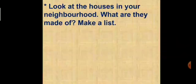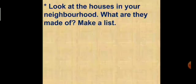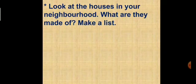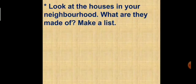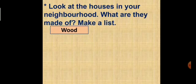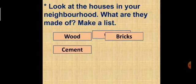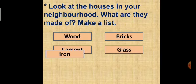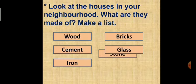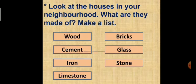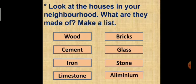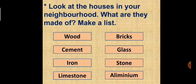Now, look at the houses in your neighborhood. And what are they made of? Make a list. So, you have to write in your textbook. Wood, bricks, cement, glass, iron, stone, limestone, aluminum and so many things. Okay? You have to write in your textbook whatever you saw in your neighborhood.